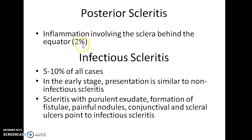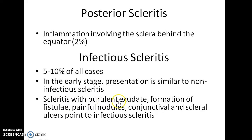Posterior scleritis is a condition in which there is inflammation involving the sclera behind the equator; it is seen in 2% of cases. Infectious scleritis is seen in 5 to 10% of all cases. In the early stage, its presentation is similar to non-infectious scleritis. However, it is necessary to distinguish infectious from non-infectious scleritis because the treatment differs. Scleritis with purulent exudate, formation of fistulae, painful nodules, conjunctival and scleral ulcers point to a diagnosis of infectious scleritis.